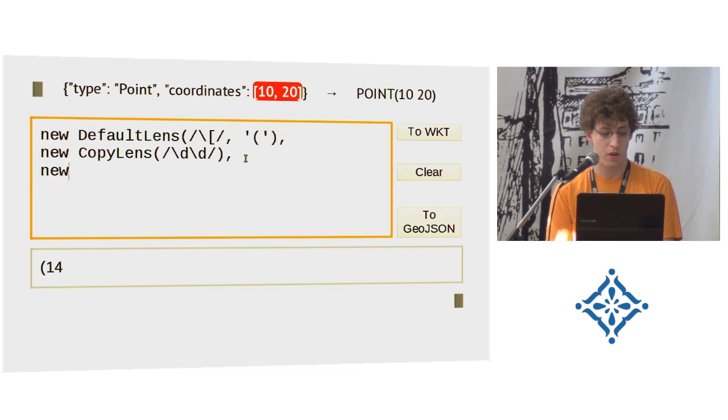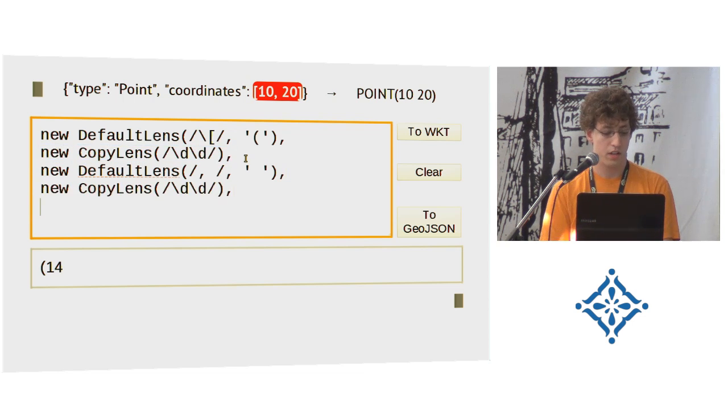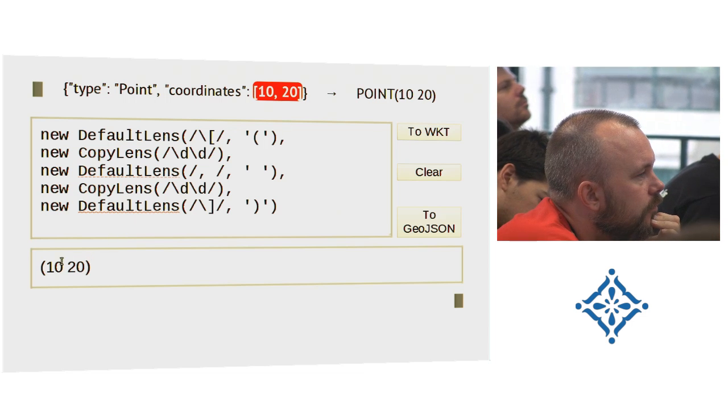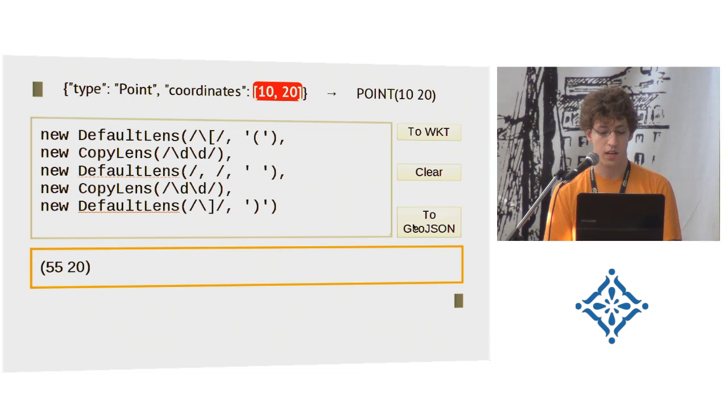Now I just finish this example because we now need again a default lens which transforms the comma and space to just a space. And then we need another copy lens to copy the coordinate. And finally, we again use the default lens to transform the closing square bracket to a round one. And now I hope I didn't make a mistake. Yeah, there we go. And now we can again change the numbers and get it transformed back.